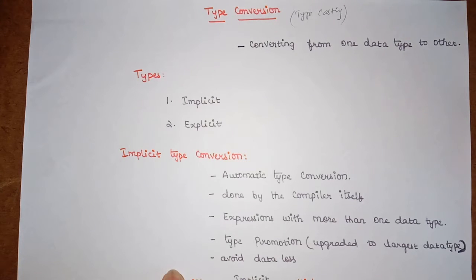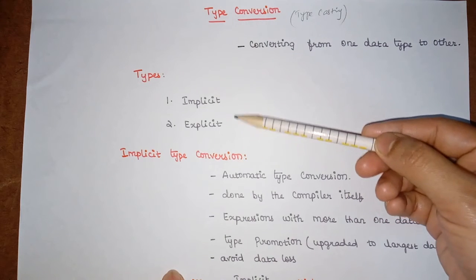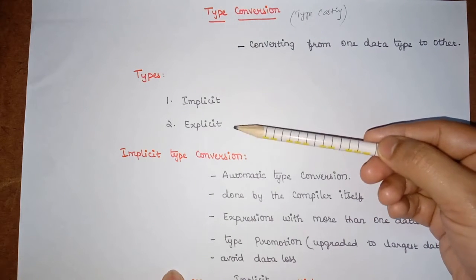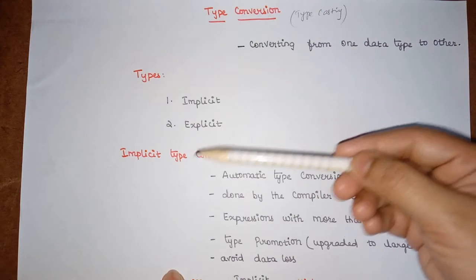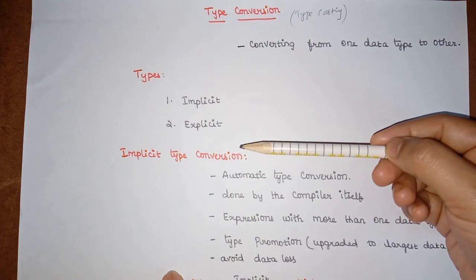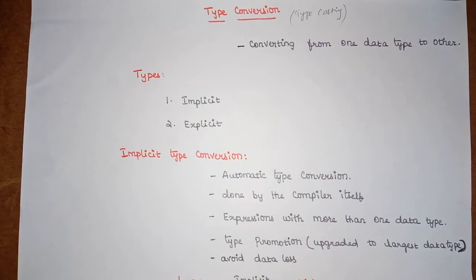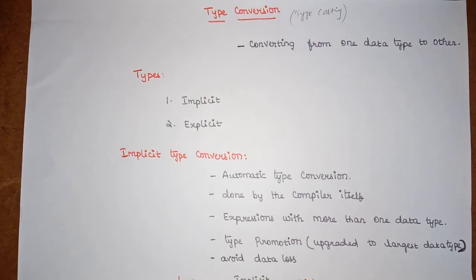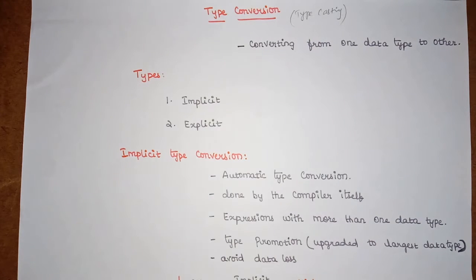So at that time we can go for this type conversion. In type conversion, we have two classifications. One is implicit type conversion and the next one is explicit type conversion. Implicit type conversion means it is an automatic type conversion. This conversion can be done by the compiler itself on its own — there is no involvement of the user here.